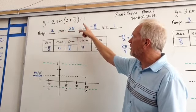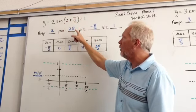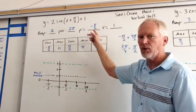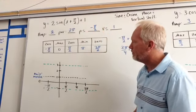Our phase shift: we set this inside equal to 0 and we get x is equal to negative pi over 2. Then our vertical shift is up one unit.